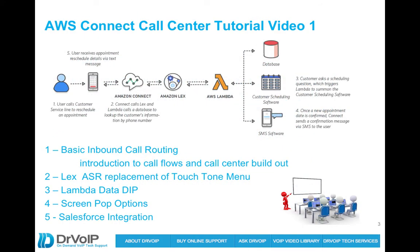We're going to build out a basic inbound call center using AWS Connect. Then as we add levels of sophistication, initially we'll have an incoming call to a touch-tone call tree, an interactive voice response in which the caller will press one for sales, two for support, three to check a ticket status. On top of that, we will build out Lex, the Automatic Speech Recognition Engine. Then ultimately we'll do a data dip using Lambda, look at some screen pop options, and ultimately integrate with the Salesforce CRM.